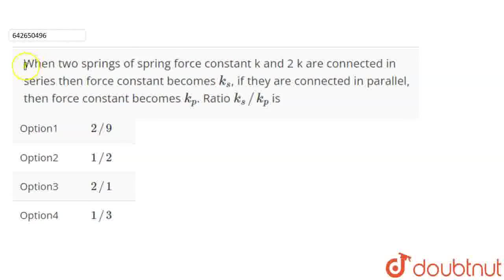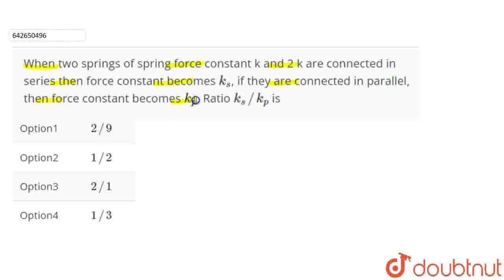In this question, we are given that when two springs of spring constant K and 2K are connected in series, the force constant becomes Ks. If they are connected in parallel, the force constant becomes Kp. We need to find the ratio of Ks upon Kp.